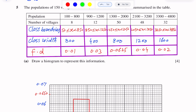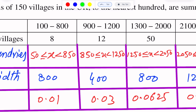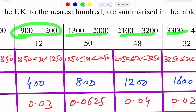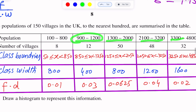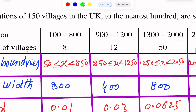To draw the histogram, first we look through the data and observe whether the data is continuous. The data is not continuous because 100 to 800, then next is 900 to 1200, and so on. So there will be a gap. To remove the gap, we will take the class boundaries.